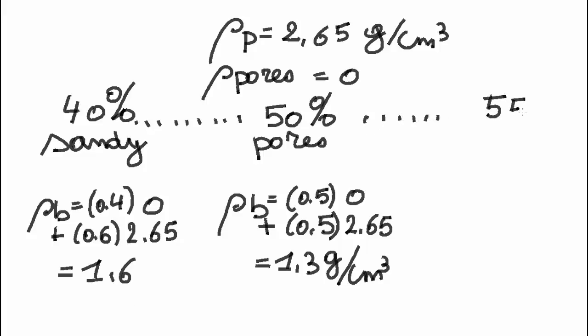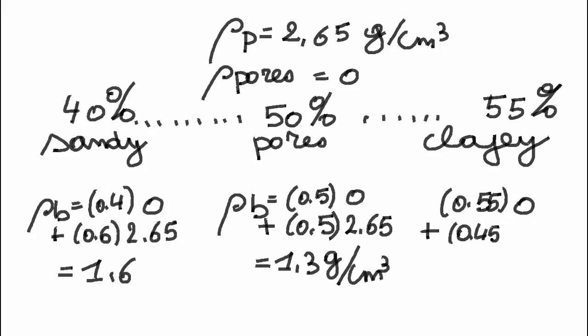The more clayey soils have a porosity up to 55%. Their bulk density will be 55% of density 0, plus 45% of solid material with density 2.65. It has a density of 1.2 g per cm³.